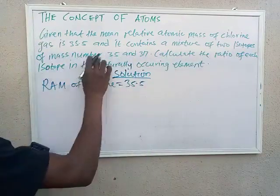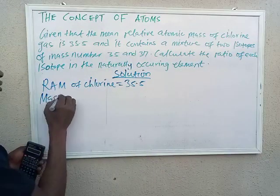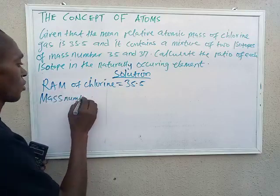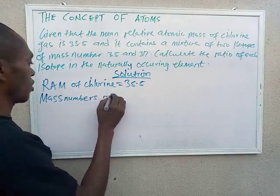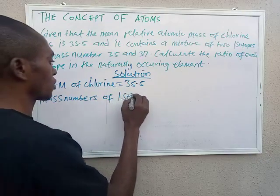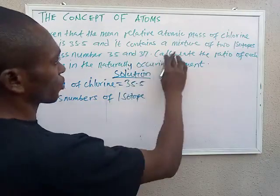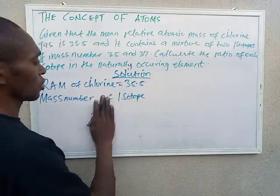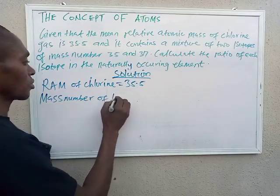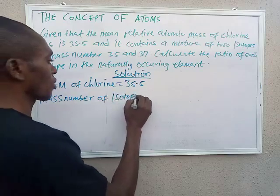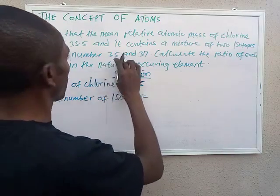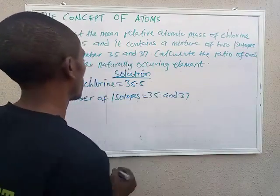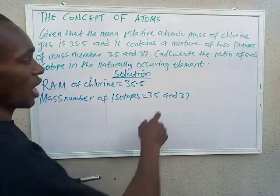The mass numbers of the isotopes are 35 and 37. We are now asked to calculate the ratio of each isotope in the naturally occurring element.